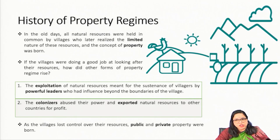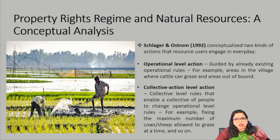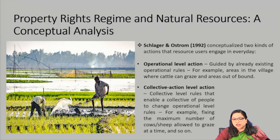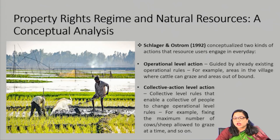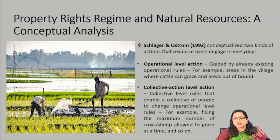This was also the beginning of other property management regimes we know today. Having discussed property, property rights, and property regime, let us now analyze Schlager and Ostrom's work which explained the working of property regimes. They categorized two tiers of action that people undertake in daily activities in relation to property. The first is at the operational level of action and the second is the collective choice level of action. These two kinds of actions are determined by appropriate rules. Operational rules are predetermined rules that existed since a long time and no one knows who framed them — like which areas in the village cattle could be grazed and which areas are forbidden.